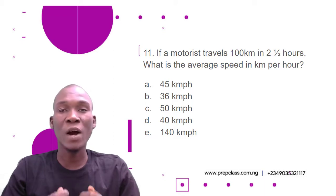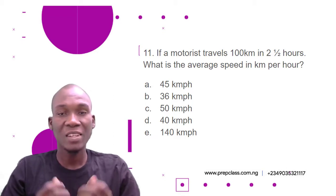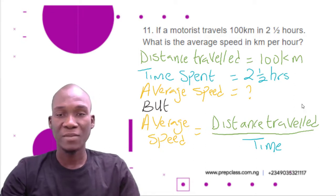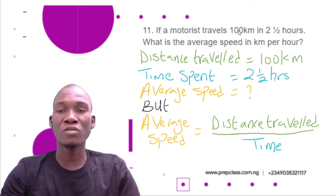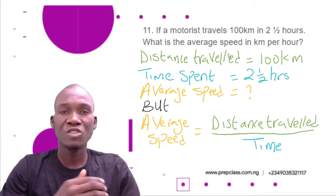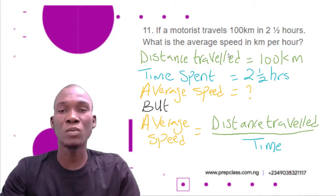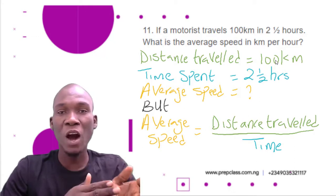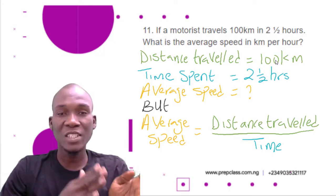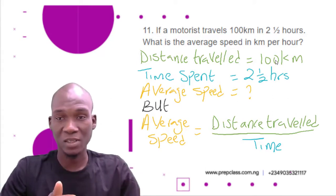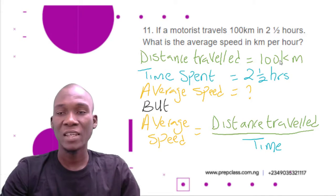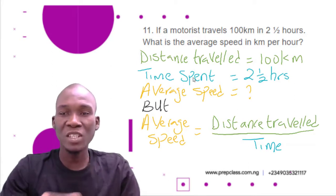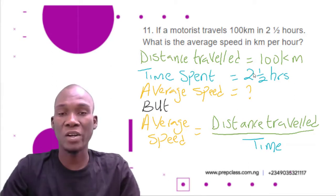Now we have the information, so we have to bring it out in order to solve the question. From the question, a motorist travels 100 kilometers — that is the distance. Traveling 100 kilometers means you've covered a distance of 100 kilometers. Just imagine walking from your house to the nearest store in your area; the distance you cover is measured in kilometers. The time spent in this question is two and a half hours.